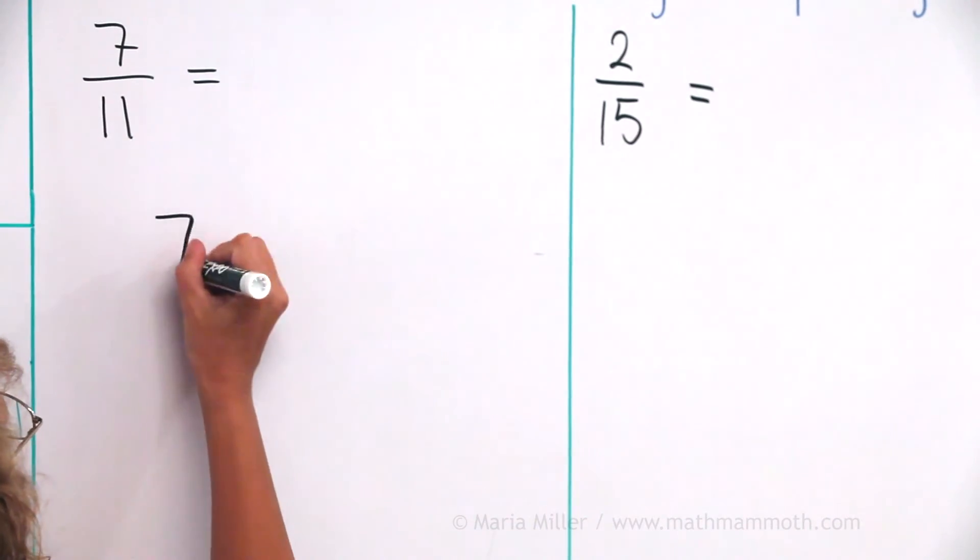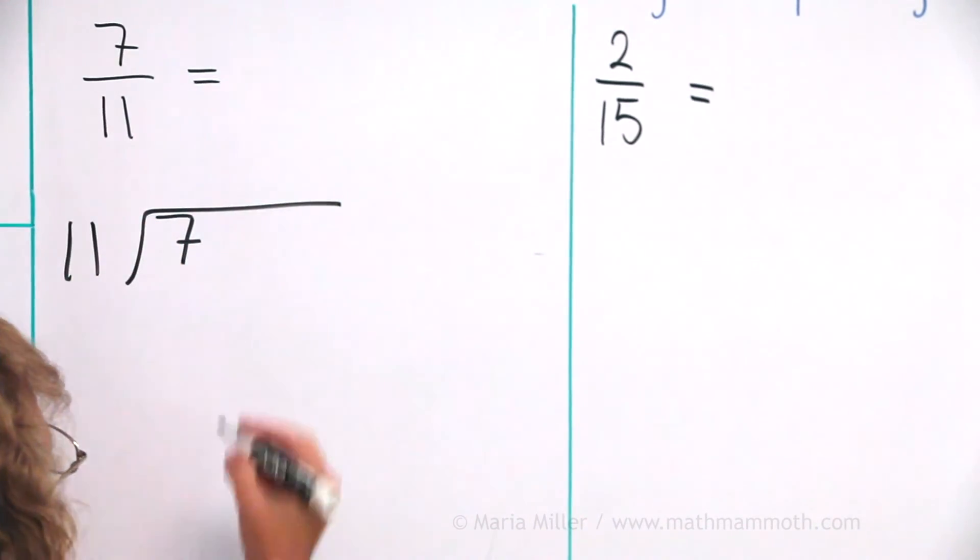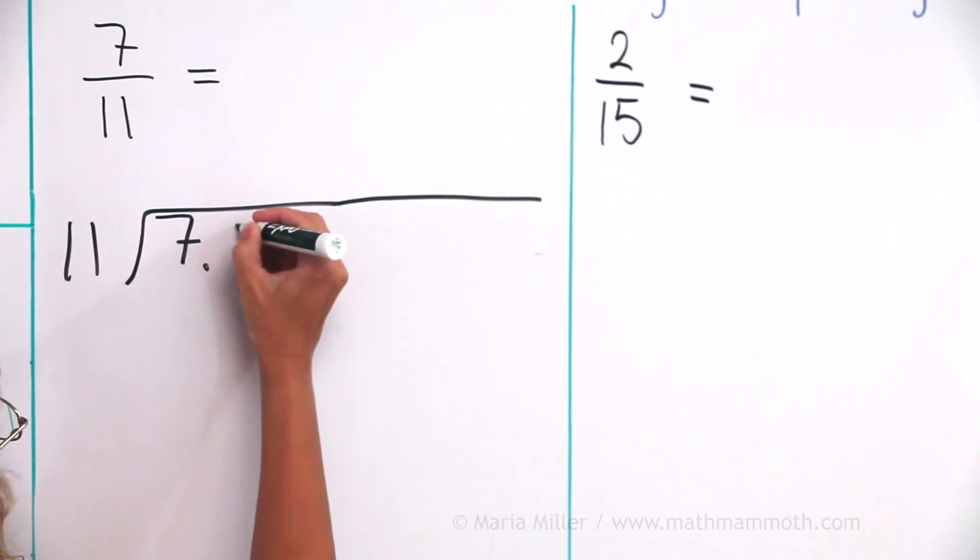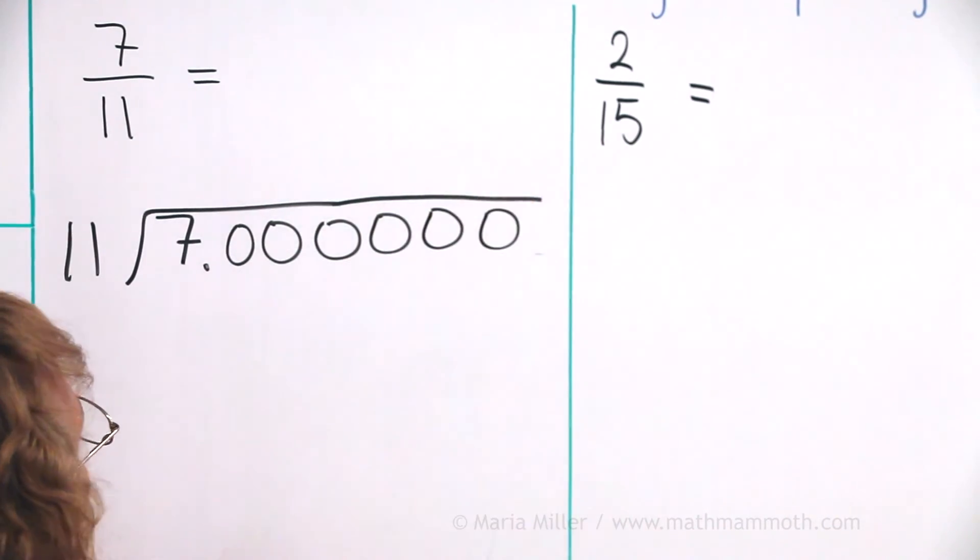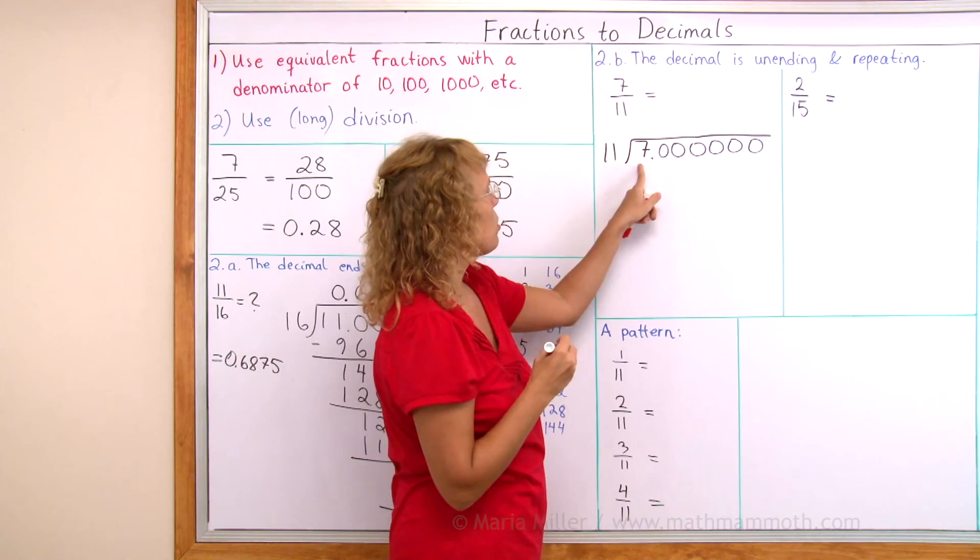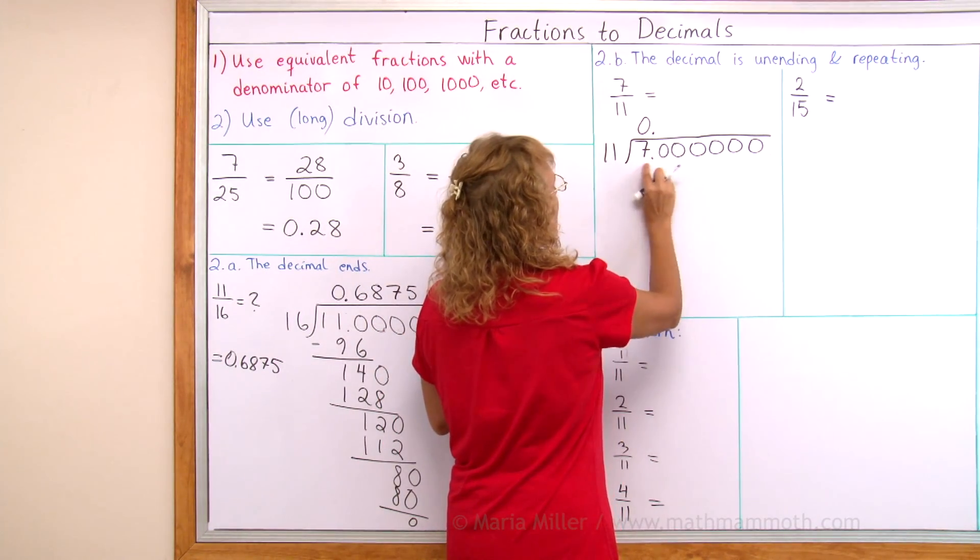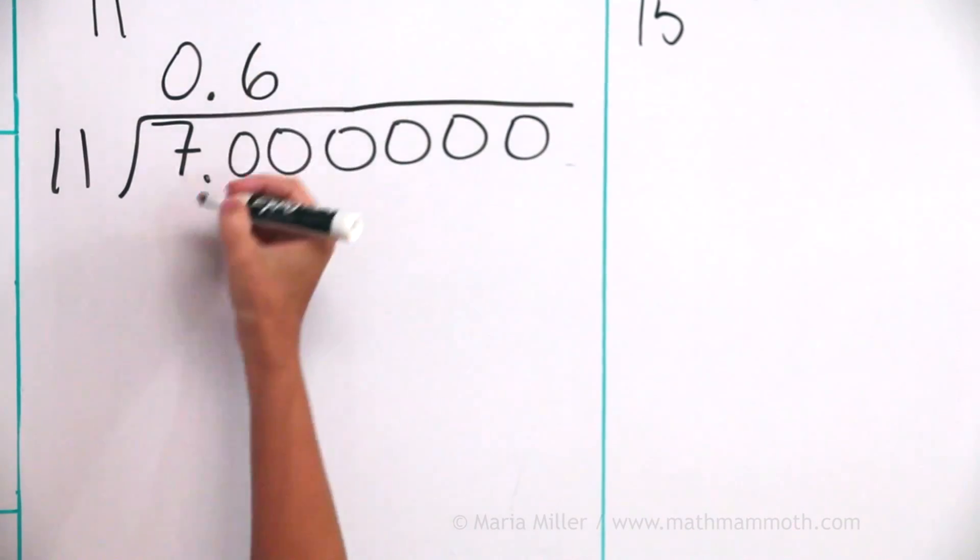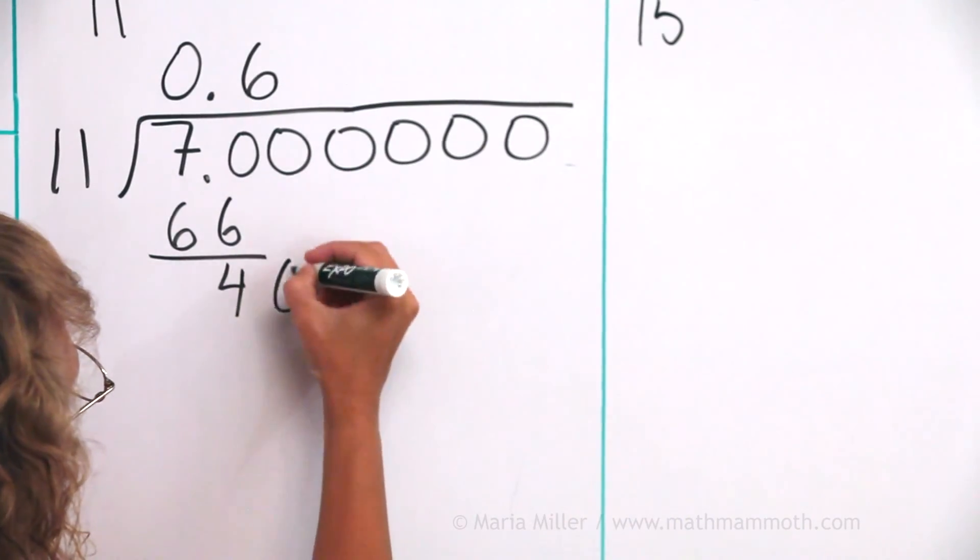I will divide 7 divided by 11. Notice again, 7 goes inside this corner and 11 here is the divisor. We will put lots of decimal zeros here and then start dividing. 11 goes into 7 zero times. Then look at 70 here. 11 goes into 70 six times. 6 times 11 is 66. Then 4.